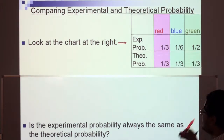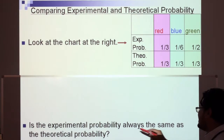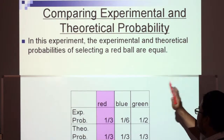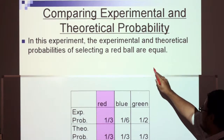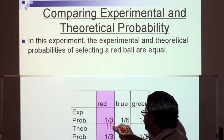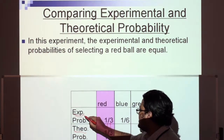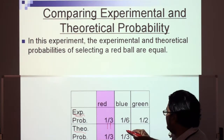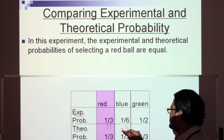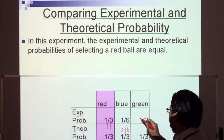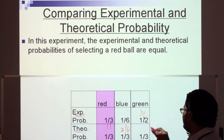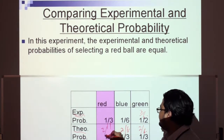So, is the experimental probability always the same as the theoretical probability? The experimental probability of selecting a blue ball is less than the theoretical, and the experimental probability of selecting a green ball is greater than the theoretical — one half is greater than one third — while red was exactly the same.